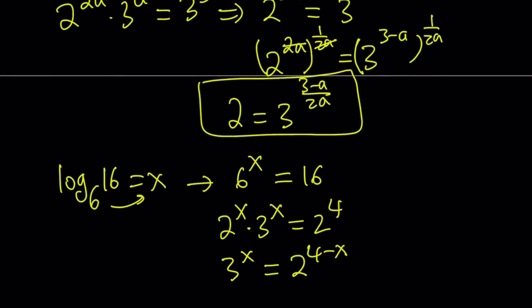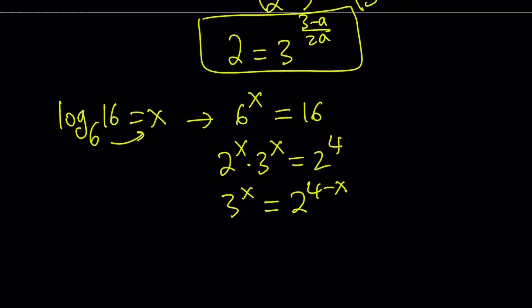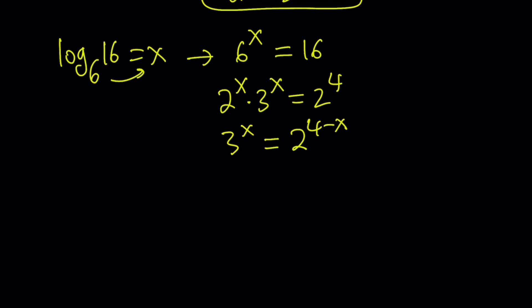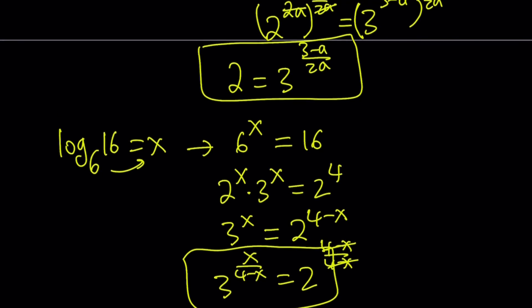So remember, in our first equation we isolated the 2. Let's do the same thing here. I can just raise both sides to the power 1 over 4 minus X. In other words, divide the exponents by 4 minus X, and this is just going to be 2 to the power 4 minus X divided by 4 minus X, which is going to be 2 to the first power, which is 2. Great. So we've got another equation for 2, and both of these are equal to 2.